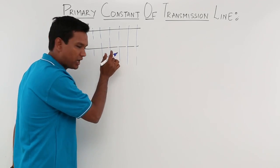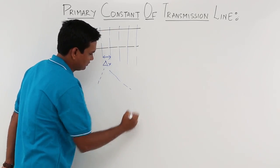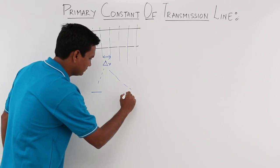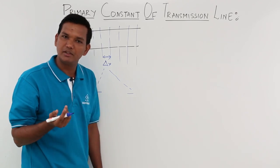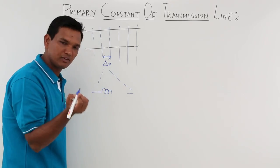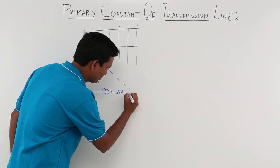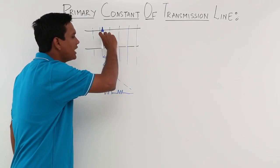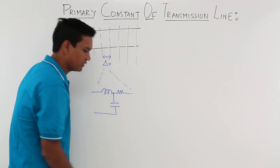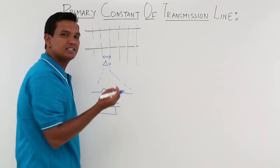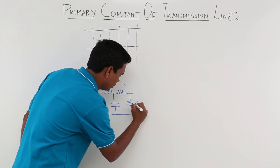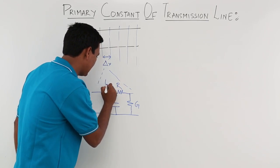If I zoom this part, this length will look like again a wire. For this wire, at high frequency it will have inductance. As it is a wire it will have resistance. As this will look like a two parallel plate capacitor, in between them it will have capacitance. In between these two wires there can be charge leakage, which will constitute the conductance. So this would be G, R, L and C.